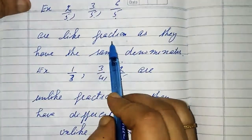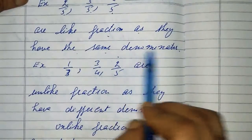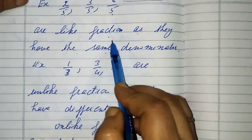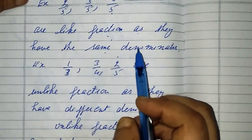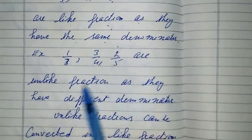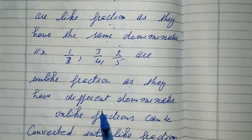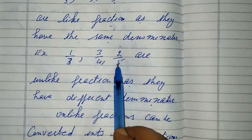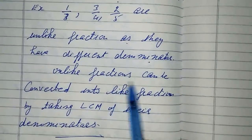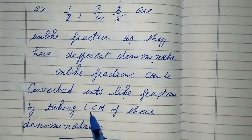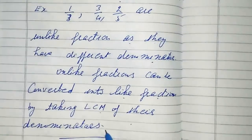Next, like fractions as they have the same denominator. Unlike fractions as they have different denominators. Unlike fractions can be converted by taking LCM of their denominators.